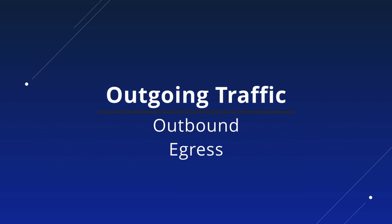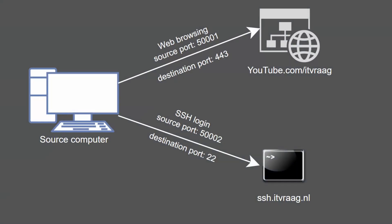For outgoing traffic, also known as outbound or egress, the host tries to connect with another host. Normally the source computer uses one of the dynamic ports to communicate with a well-known or registered port of the destination host.